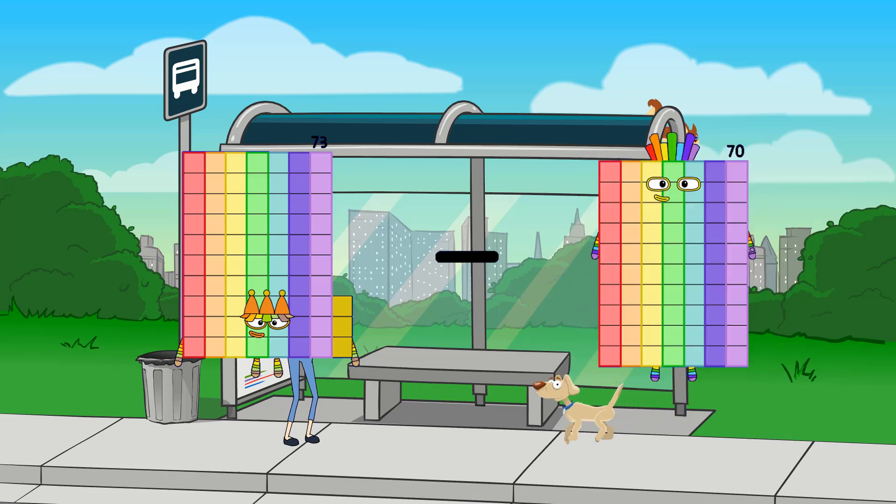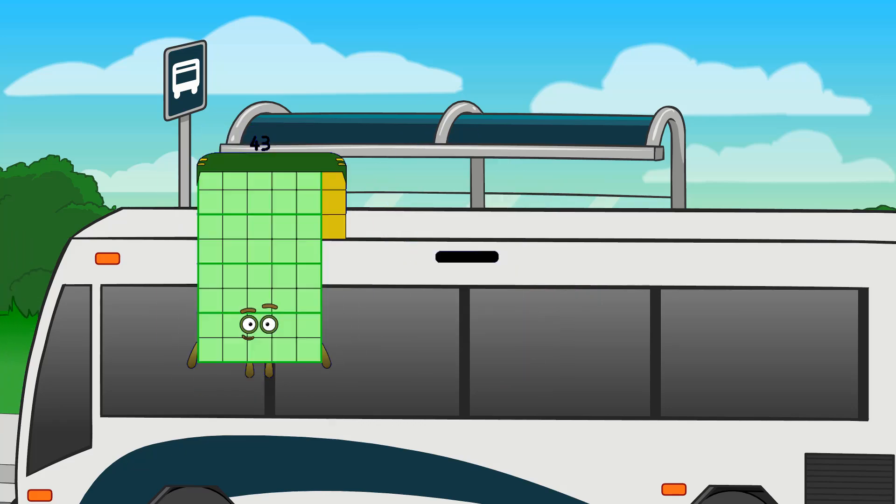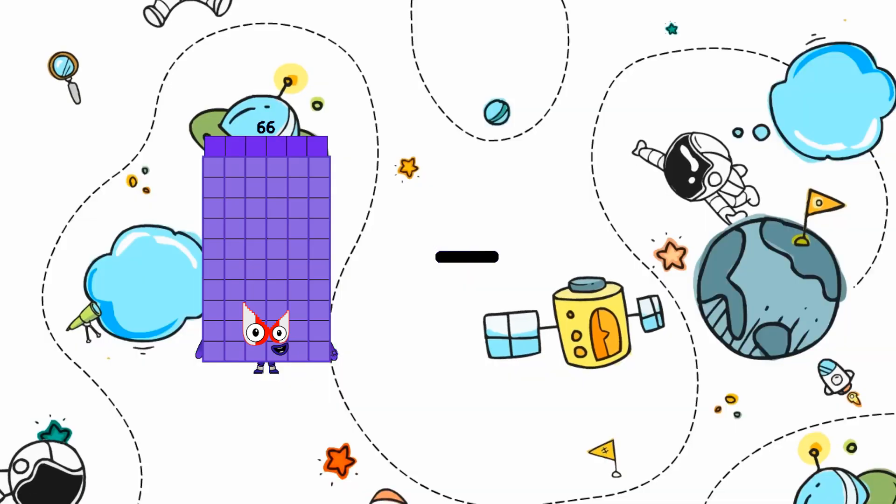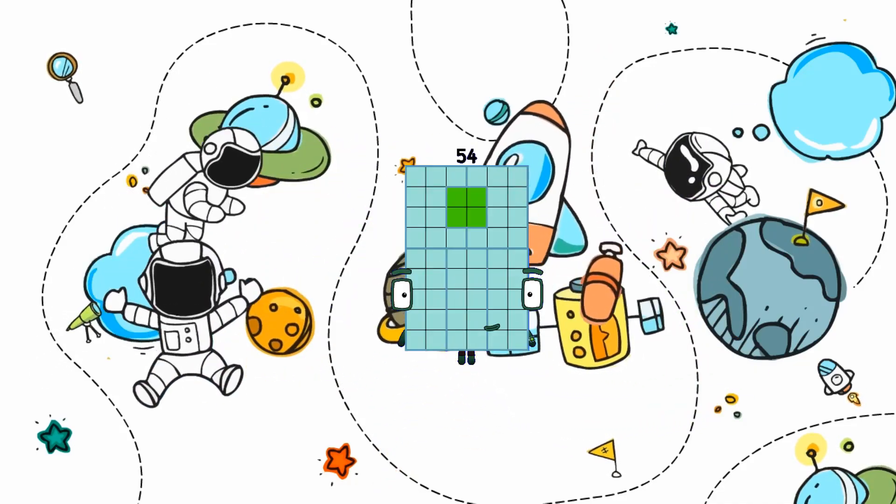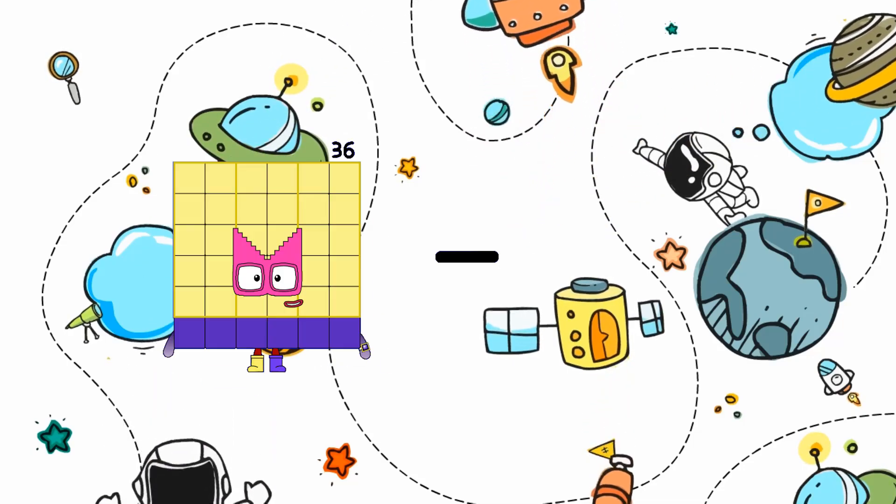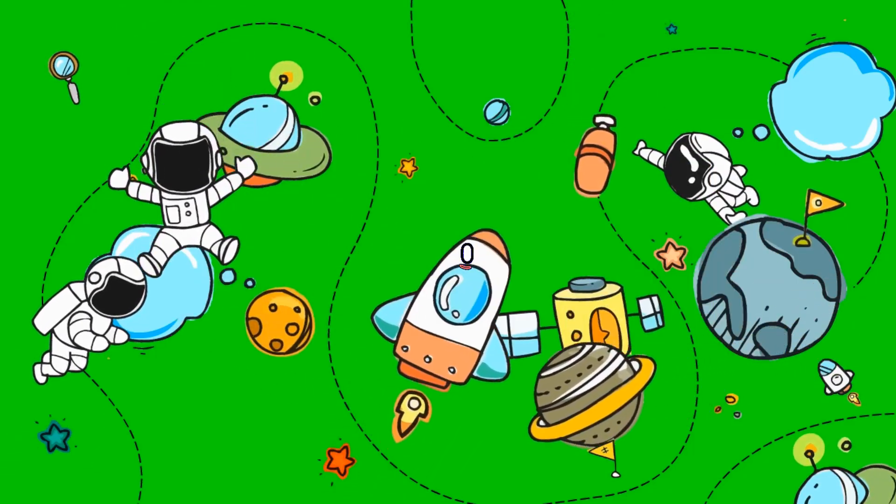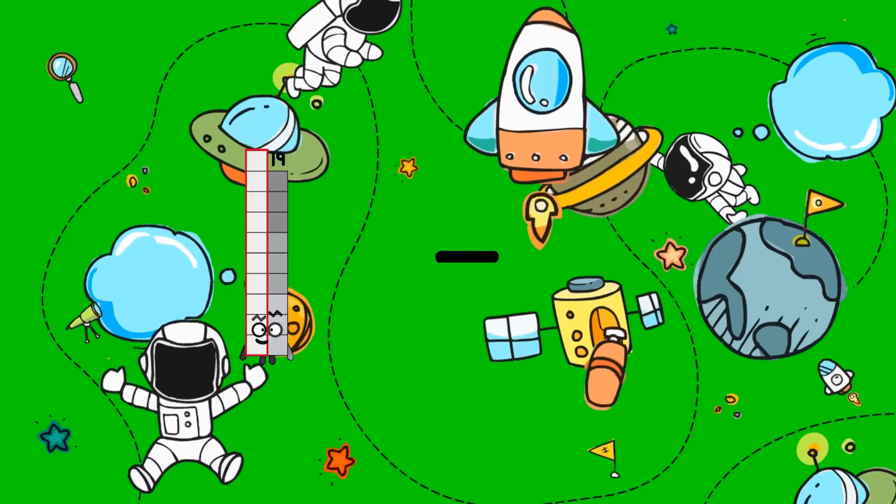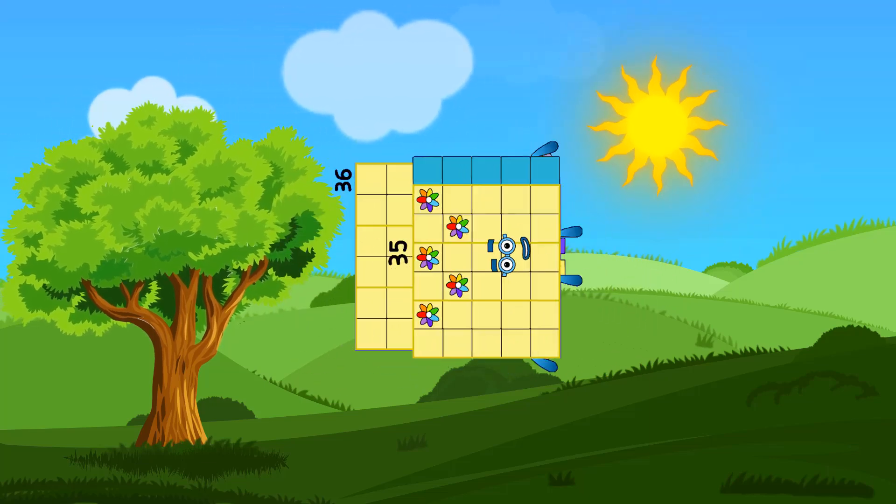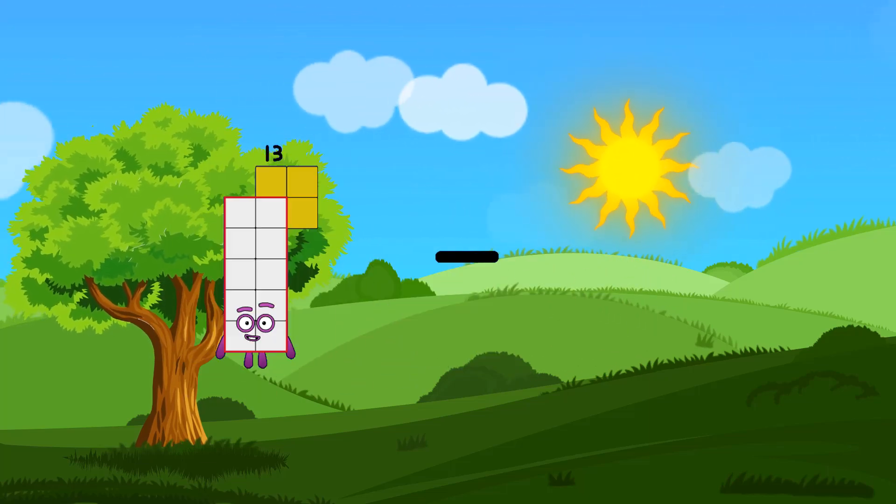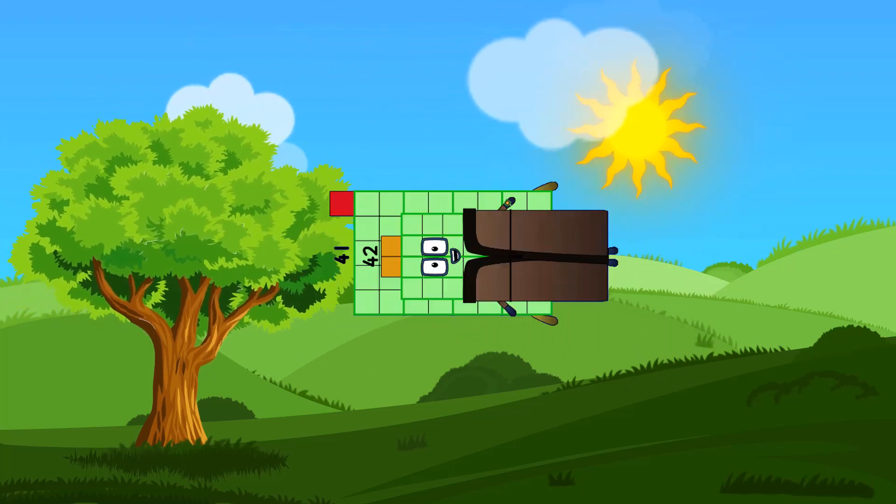75 minus 36 equals 39. 30 minus 24 equals 6. 73 minus 49 equals 24. 66 minus 12 equals 54. 36 minus 36 equals 0. 36 minus 35 equals 1. 41 minus 42 equals negative 1.